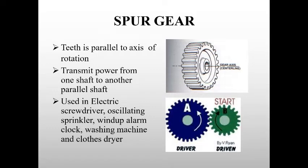Spur gear. When two shafts are parallel to each other, we can use spur gear. The teeth are parallel to the axis of rotation. It transmits power from one shaft to another parallel shaft. Used in electrical screwdriver, oscillating sprinkler, wind-up alarm clock, washing machine, and cloth dryer. One main advantage of spur gear is it is easy to design. The disadvantage is it creates some noise.